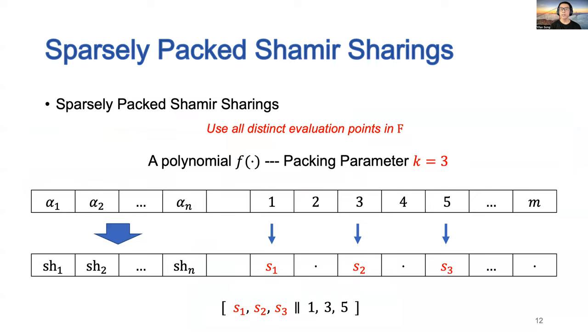Our second technique is sparsely packed Shamir sharings. Our idea is to use different secret slots to store secrets in different sharings. For example, here we may use positions 1, 3, and 5 to store secrets.